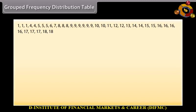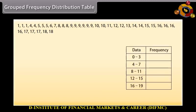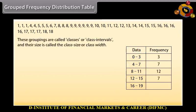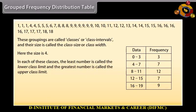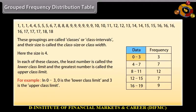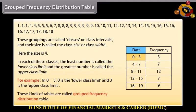Grouped frequency distribution table: Sometimes we have a large amount of data, so we condense it into groups like 0 to 3, 4 to 7, and so on till 16 to 19, since our data is from 1 to 18. These groupings are called classes or class intervals, and their size is called class size or class width. Here the size is 4. In each class, the least number is the lower class limit and the greatest number is the upper class limit. For example, in 0 to 3, 0 is the lower class limit and 3 is the upper class limit. Such tables are called grouped frequency distribution tables.